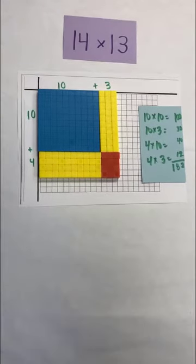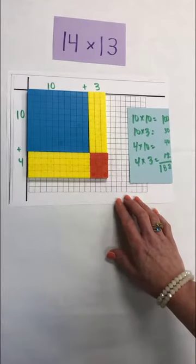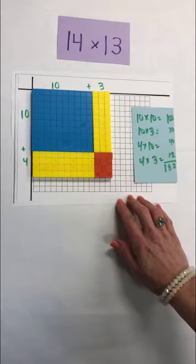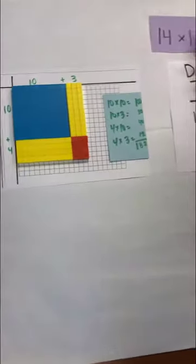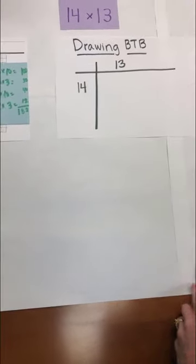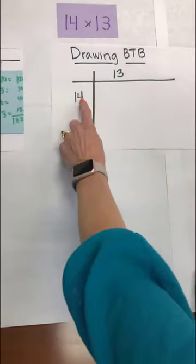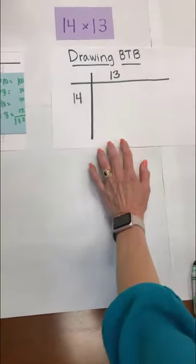Okay so we just looked at a pictorial model and now we're going to transfer our base ten blocks or concrete to our drawing. So our problem again is 14 times 13. So what we're going to do is we're going to do the same thing we did before. We're going to think of 14 and 13 as our factors and we're creating our product in the middle.